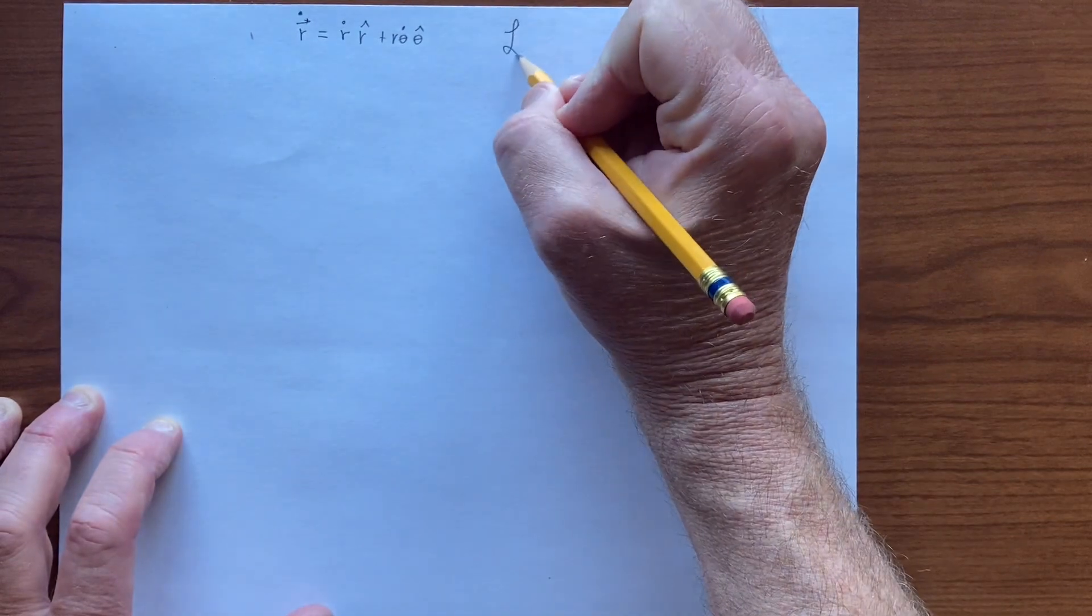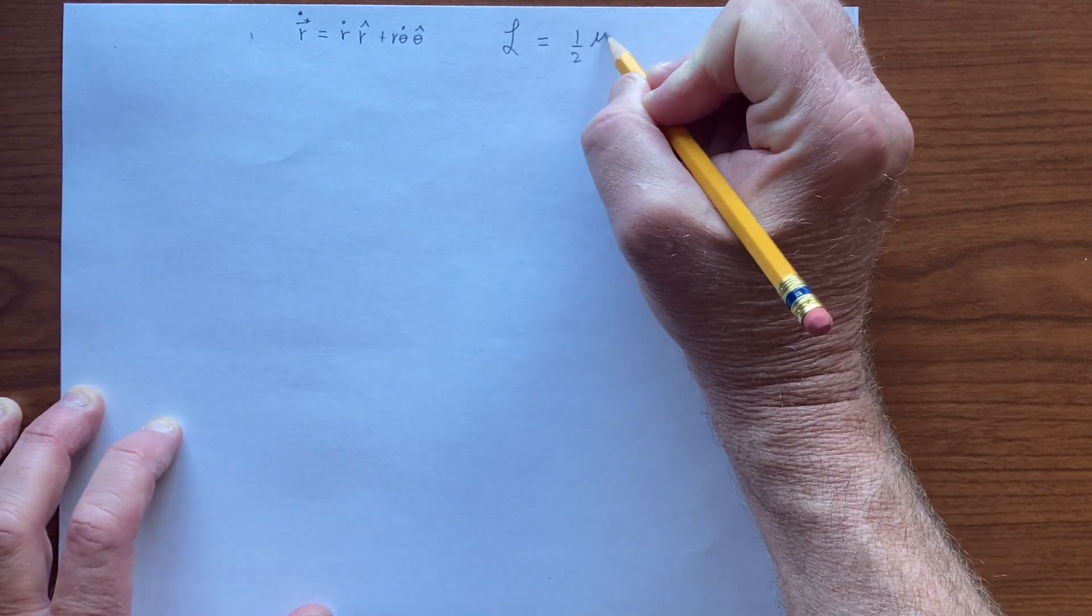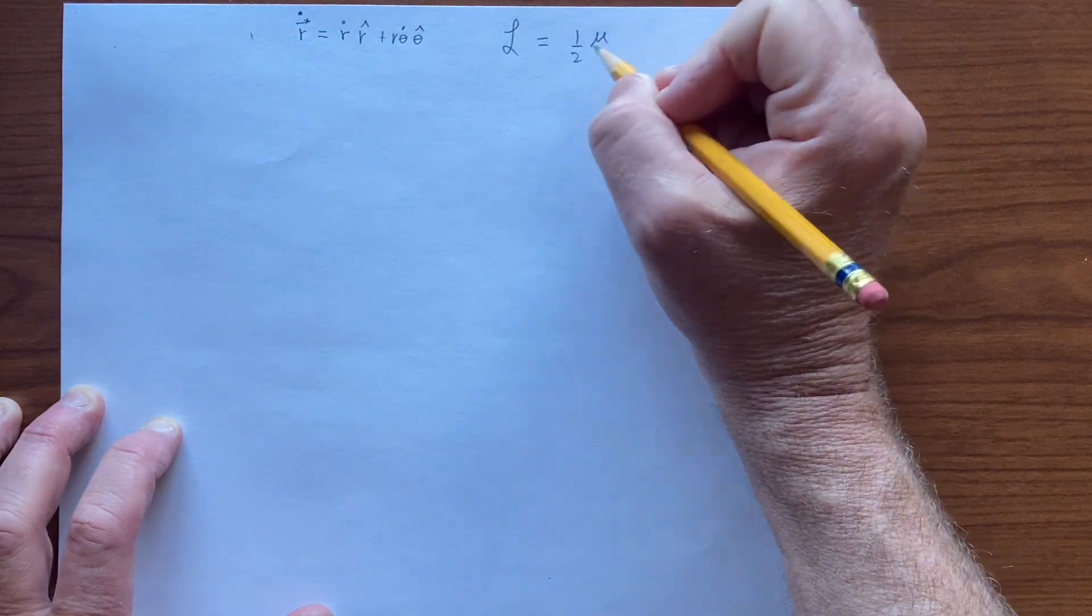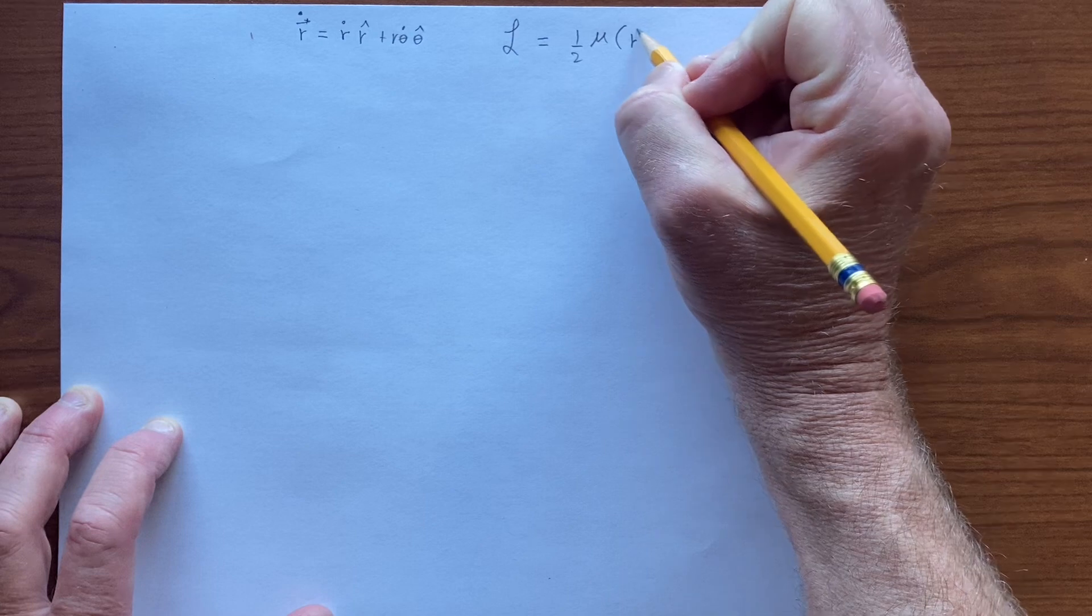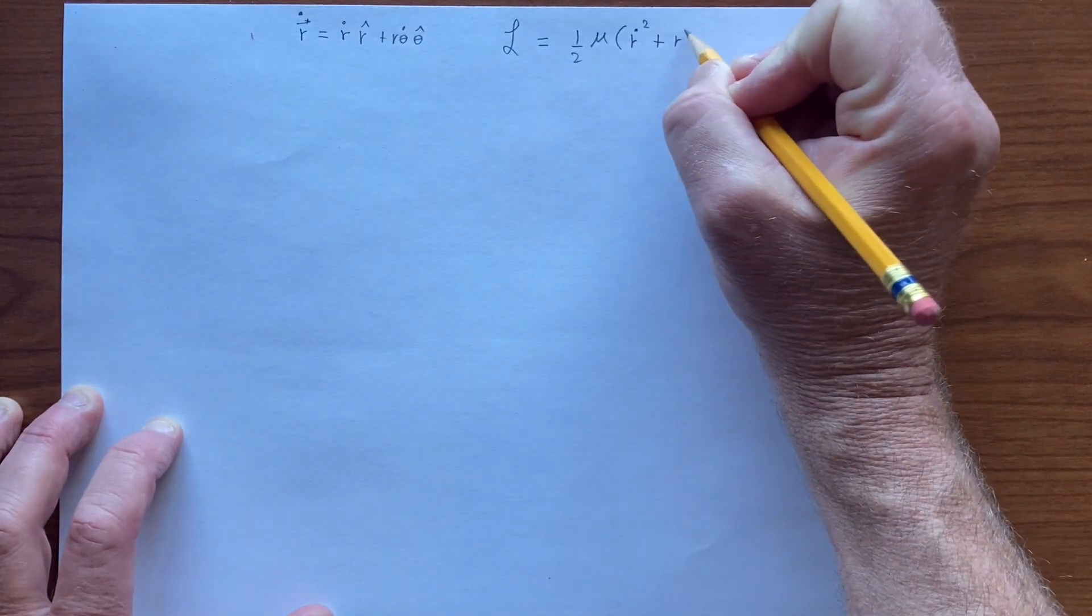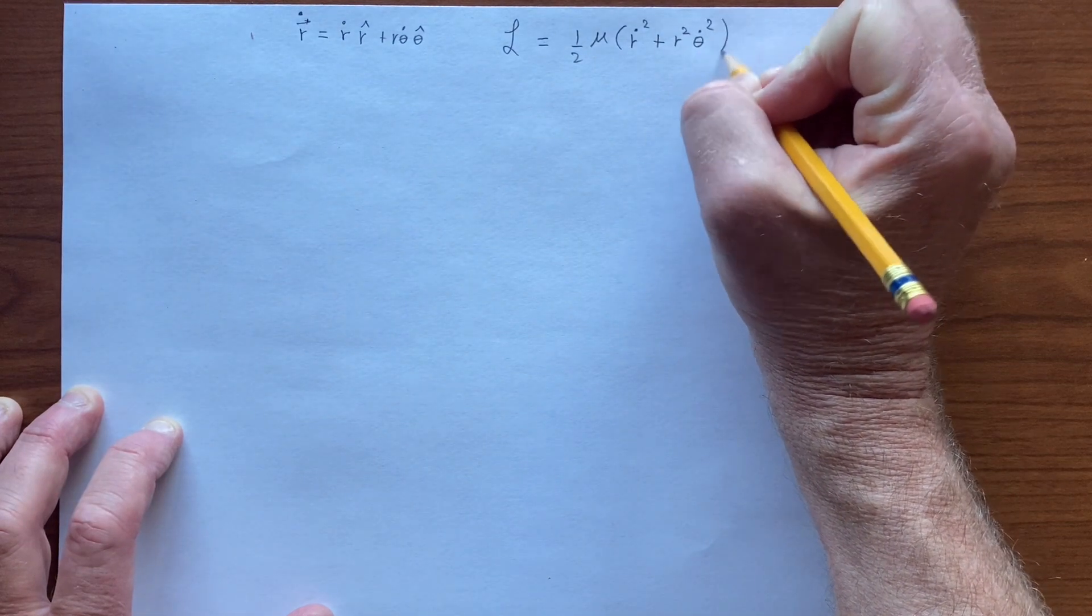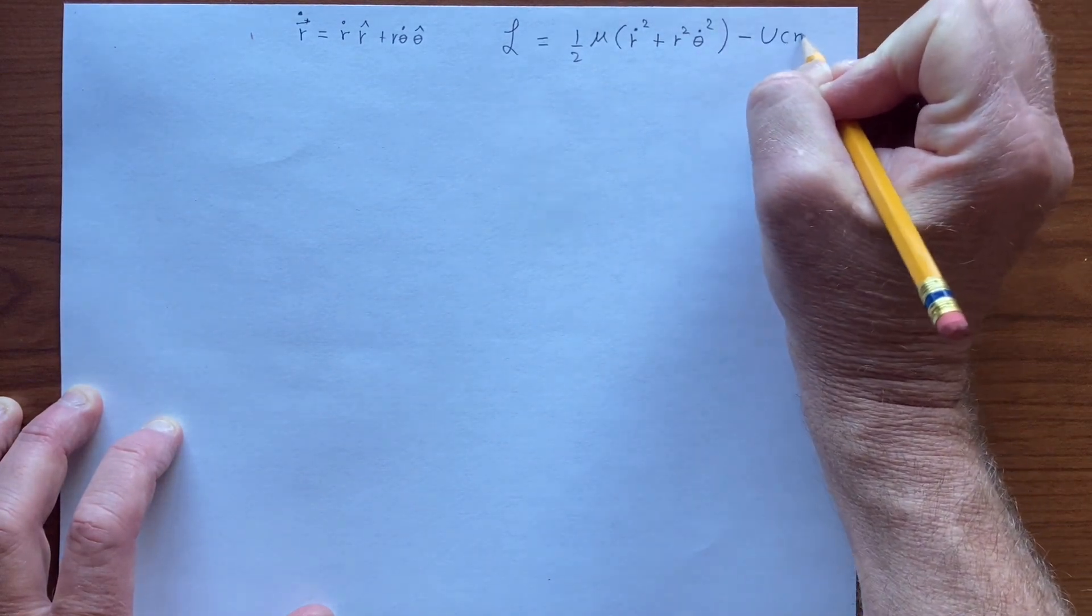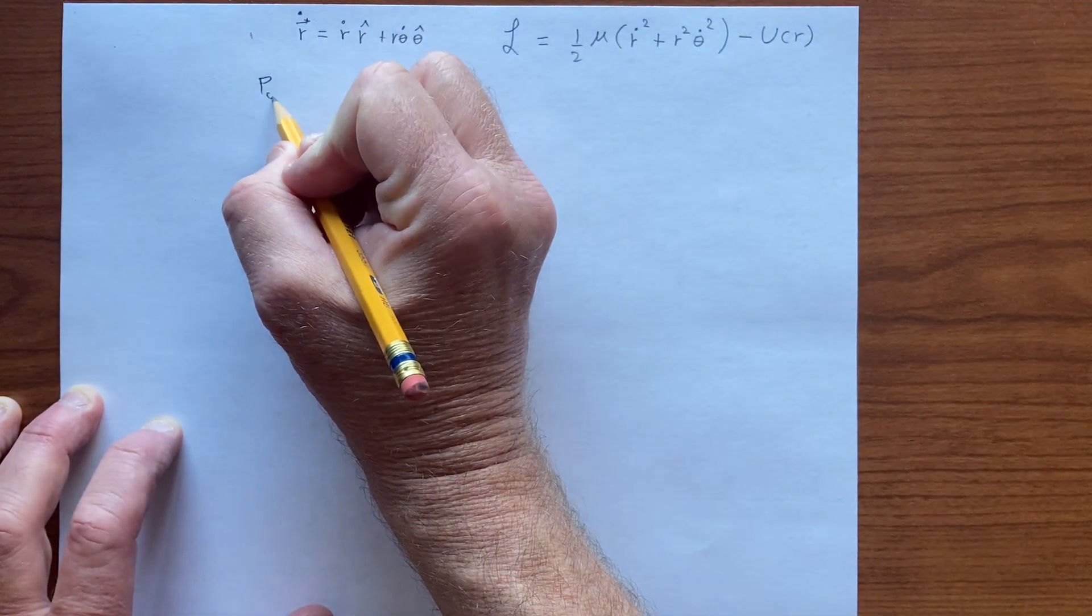And we can write the Lagrangian as one-half times this reduced mass, that we had there, r dot squared plus r squared theta dot squared minus the central potential. And of course we have a p